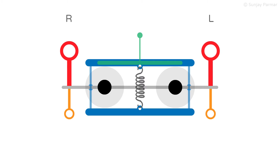The vertical gaze control centers are found between the thalamus and midbrain, in an area known as the thalamo-mesencephalic junction. This is separate from the horizontal gaze control centers which are found in the pons. Compared to horizontal eye movements, the pathways that control vertical eye movements are much more complex.